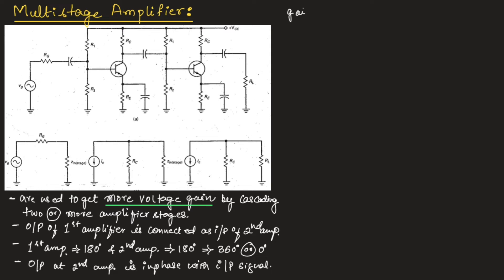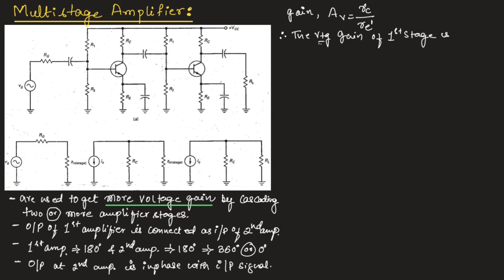Generally, the gain of an amplifier is given as Av = rc / Re'. In this AC equivalent circuit, the first stage output acts as input to the second stage. Here, rc at the output side of the first amplifier stage can be given as capital Rc parallel with Zin of the second stage. Therefore, the voltage gain of the first stage, av1, is given as (Rc ∥ Zin_stage2) / re'.